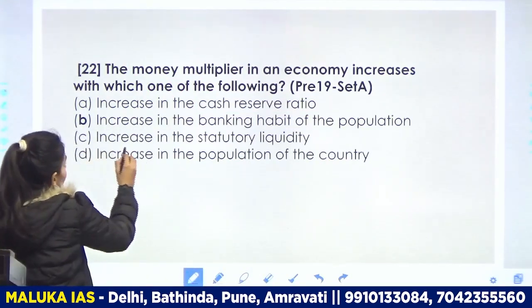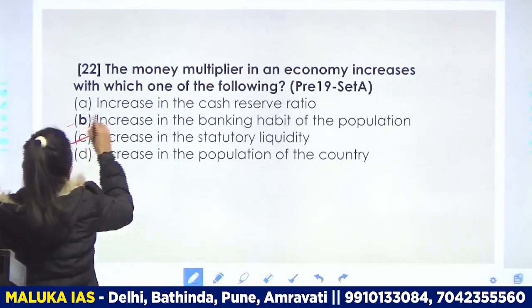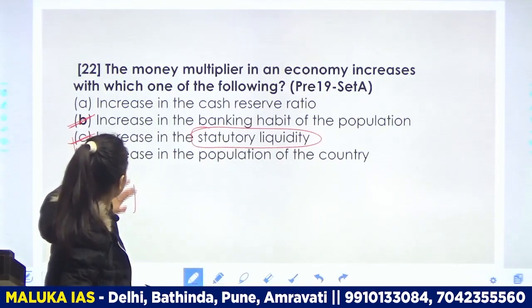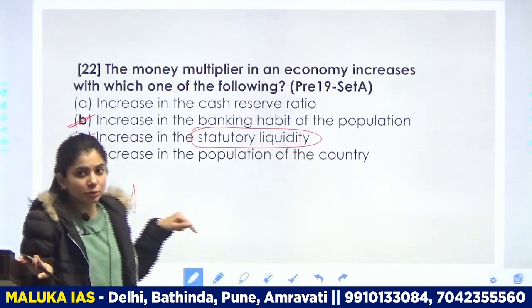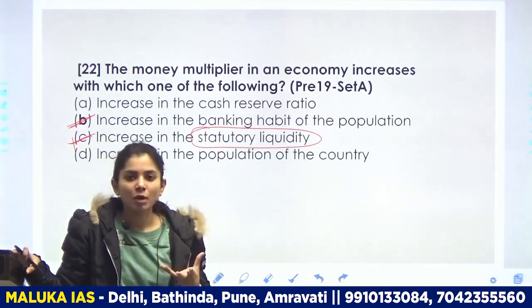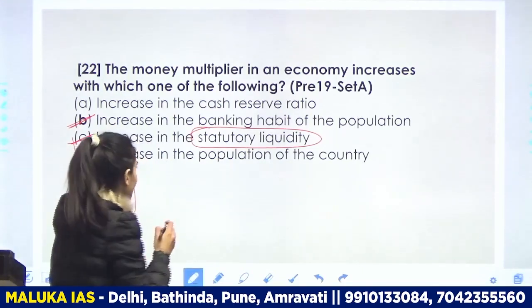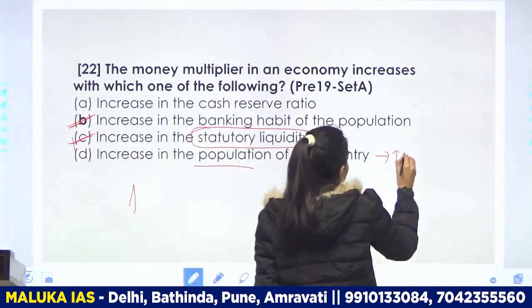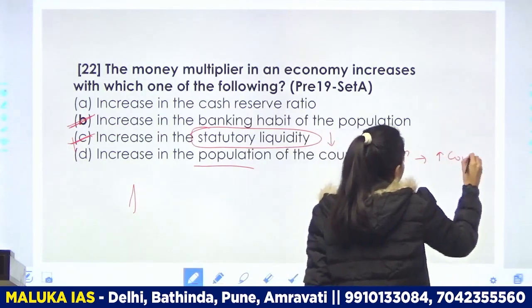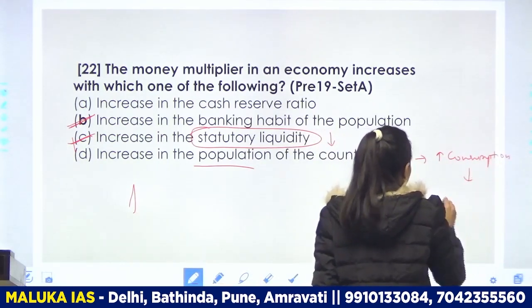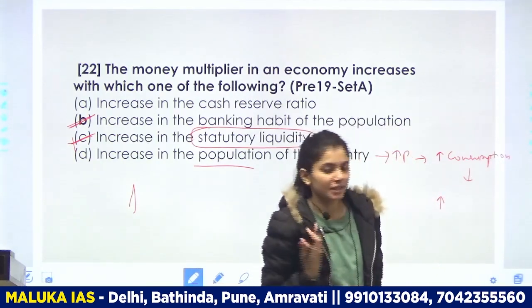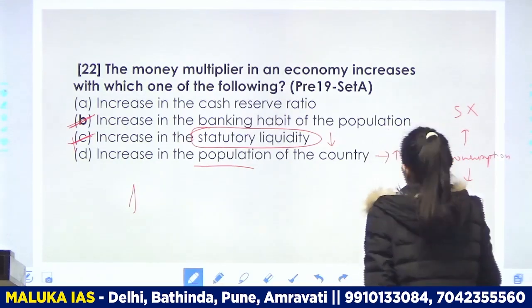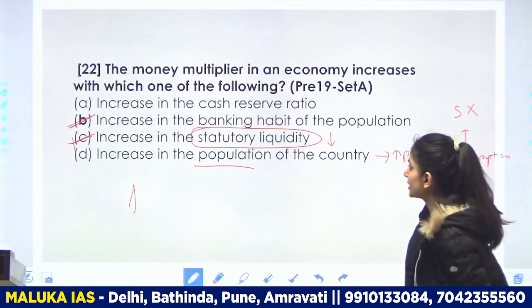Next option: increase in the statutory liquidity ratio — SLR increase हो जाती है तो commercial banks को खुद के पास ज्यादा amount रखनी पड़ेगी, जिससे money multiplier कम होगा। Population increase होगी तो consumption increase होगी — saving नहीं होगी, इसलिए money multiply नहीं होगी। So हमारा answer है — increase in the banking habit of the population.